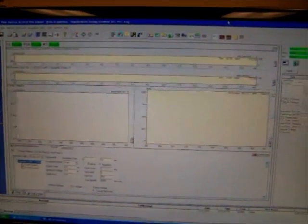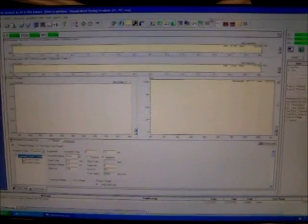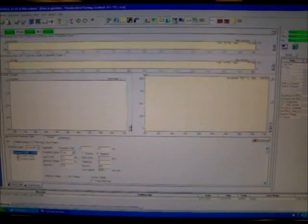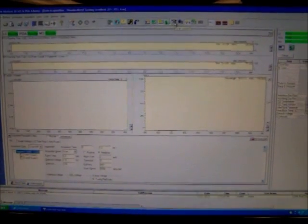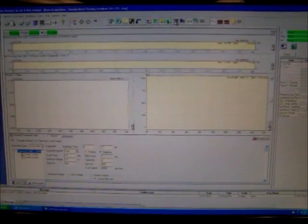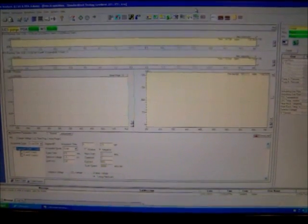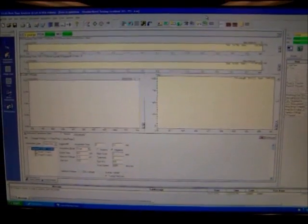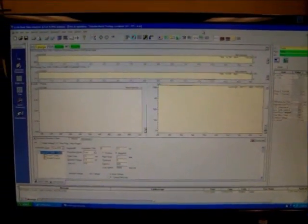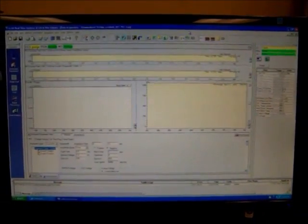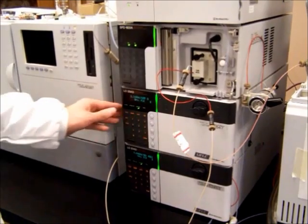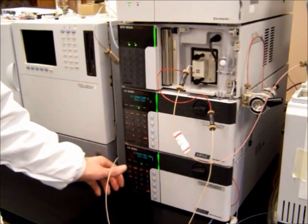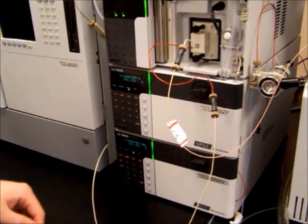So going back to the computer screen, the next thing we need to do is to purge the autosampler. To purge the autosampler, select this icon and press it. Depending on the method currently loaded into the machine, that will determine how long the purge the autosampler will take. A typical purge time is usually about five minutes and the autosampler will be purged and ready to go. Following the purge, the pumps will be seen to have shut off. When that happens, we're ready to move on to the next step.